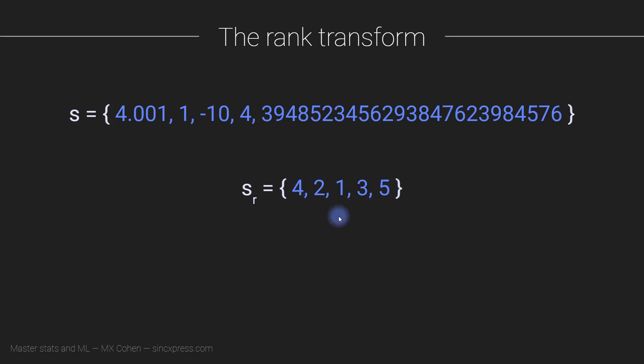That's one thing to know. It is a lossy transformation—that means we are actually losing information. There is information in this original data set that is no longer present in the rank, so it's a lossy transformation. It's lossy in part because of the third property, which is that it is a non-invertible transformation.